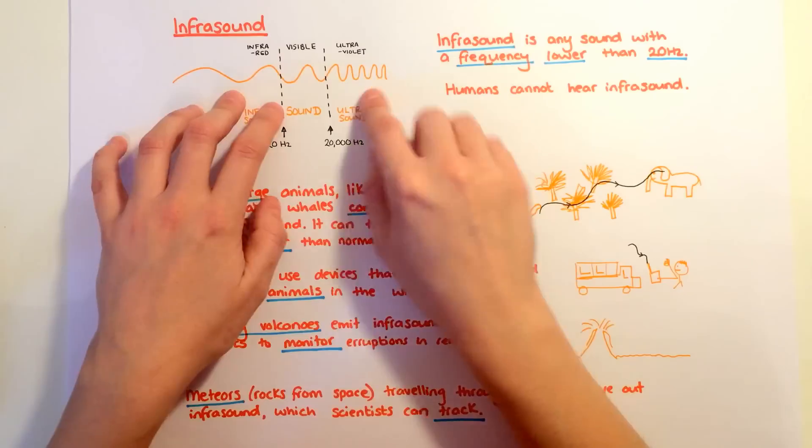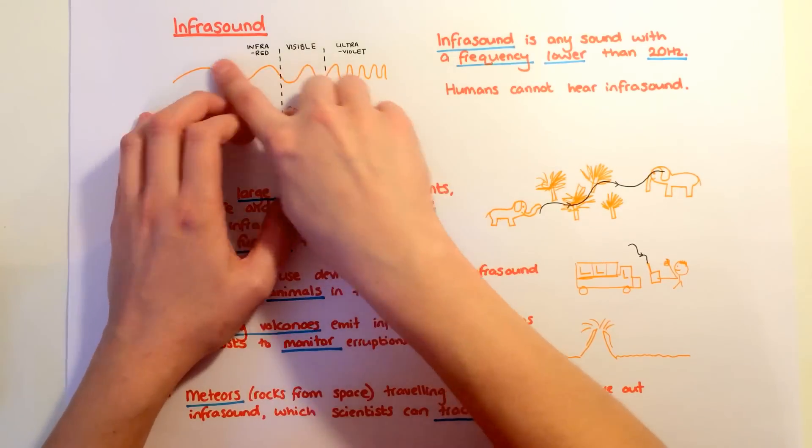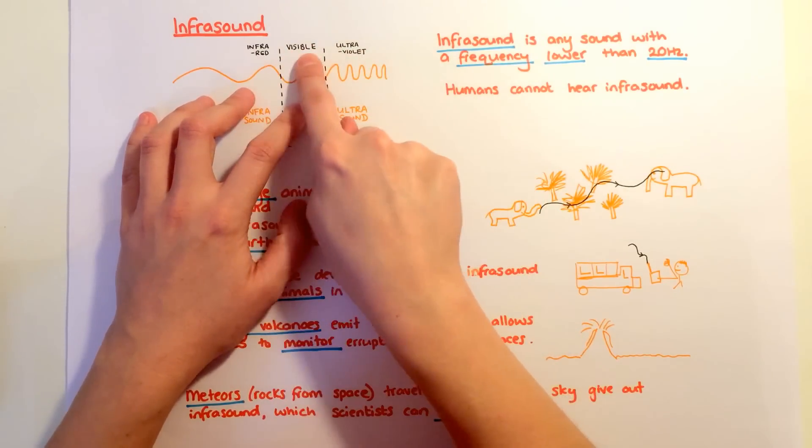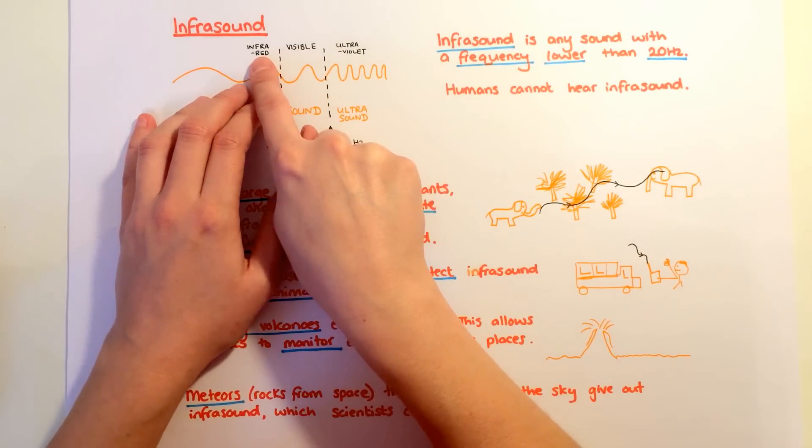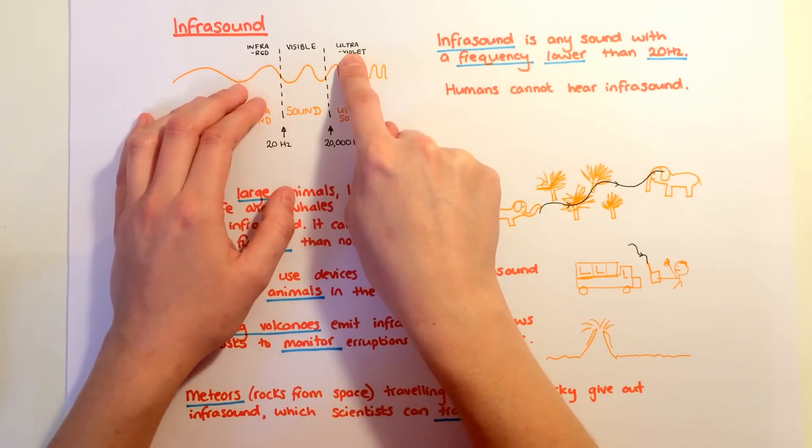Infrasound. We've talked in Topic 2 about the electromagnetic spectrum, which has a range of frequencies. There's only a small part of it that we can actually detect, that's the visible light part. Lower frequencies than that are infrared and higher frequencies are ultraviolet.